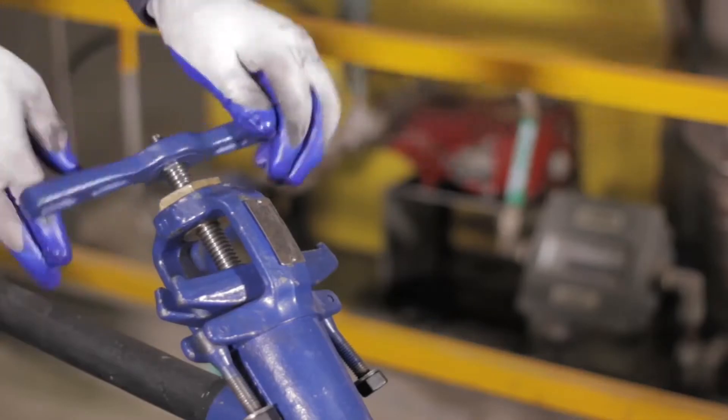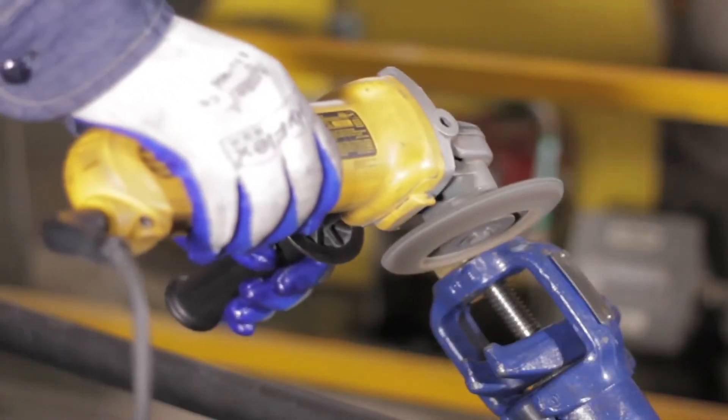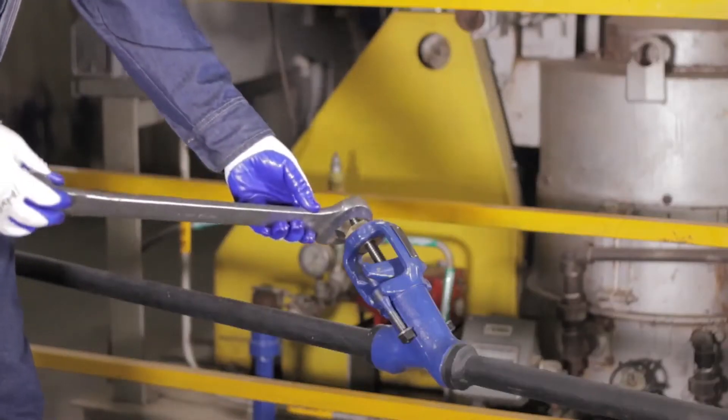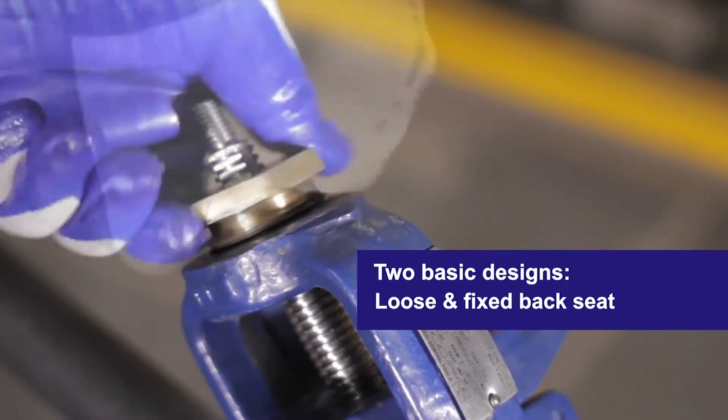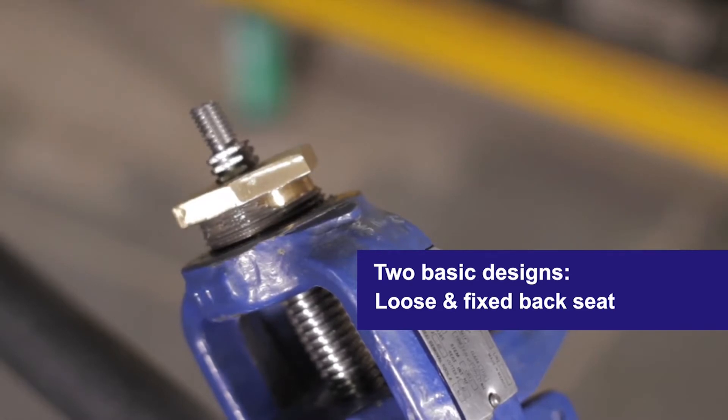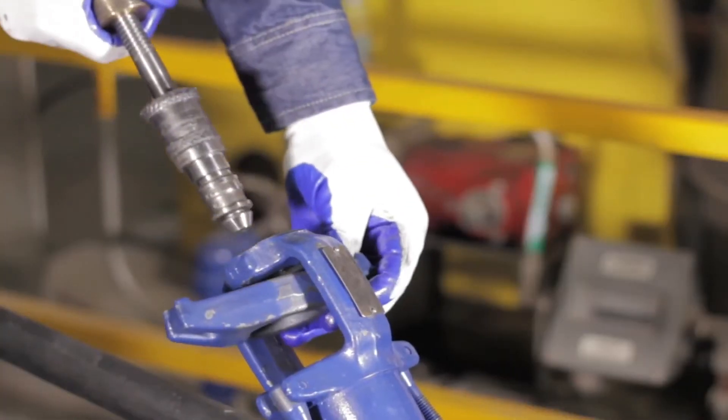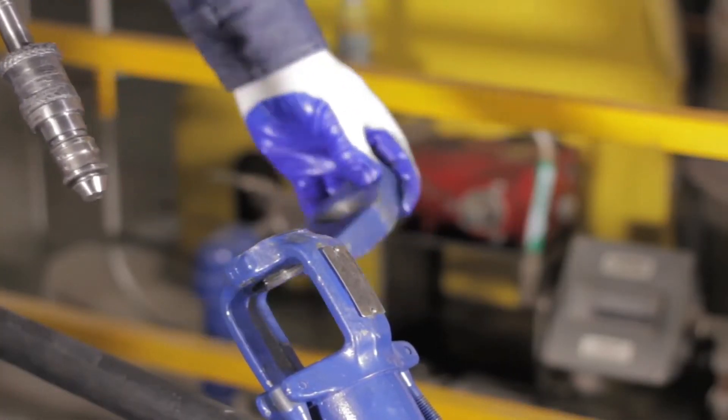Remove the T-handle. Next, remove the tack weld. You can now unscrew the yoke bushing. Welbond valves come in two basic designs: one that has a loose backseat, the other a fixed backseat. Here we are working with the loose backseat design.